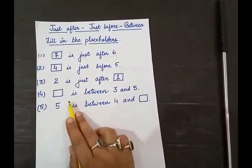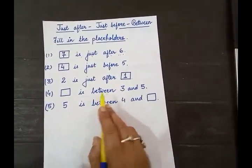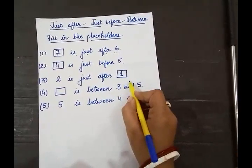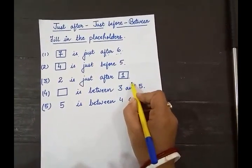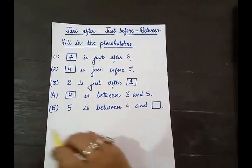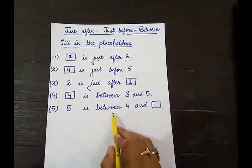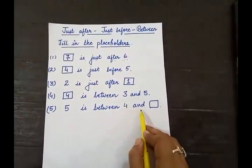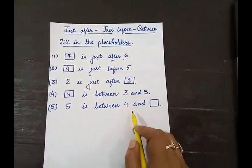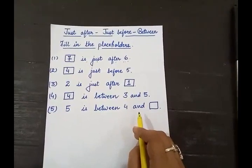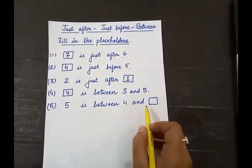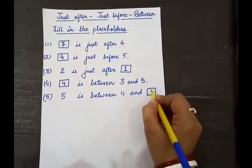Between: dash is between 3 and 5. After 3, which number comes? 4. So we will write 4 over here. Next: 5 is between 4 and dash. Start counting: 1, 2, 3, 4, 5 — then which number comes? It is 6.